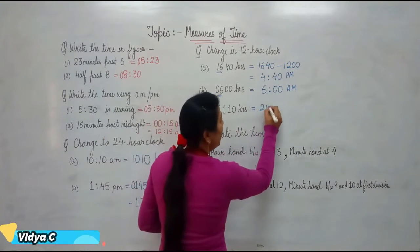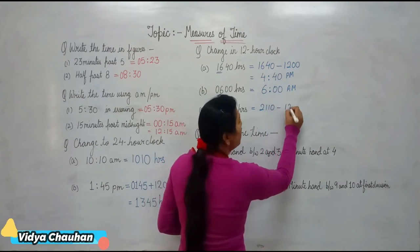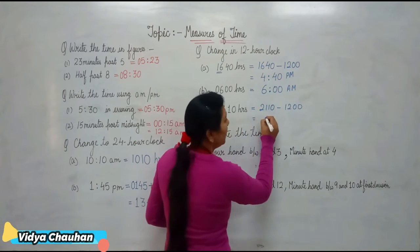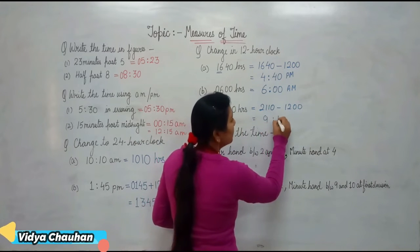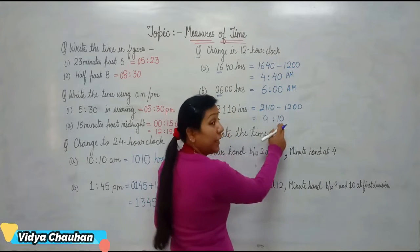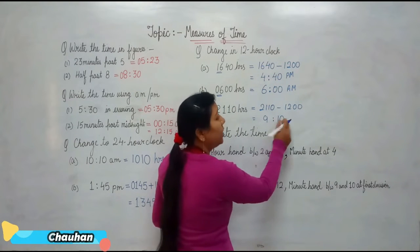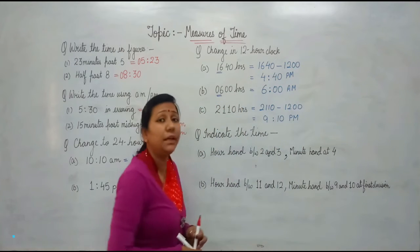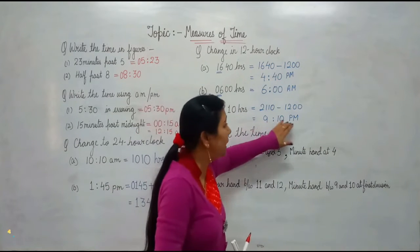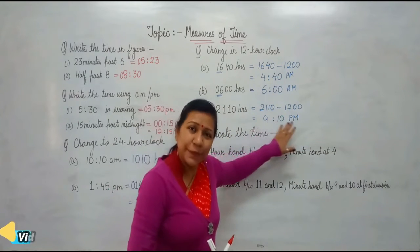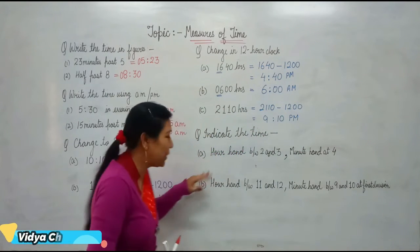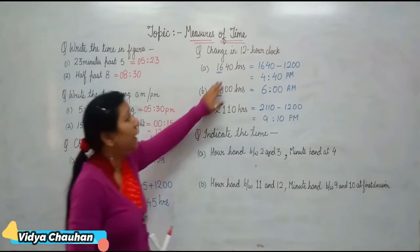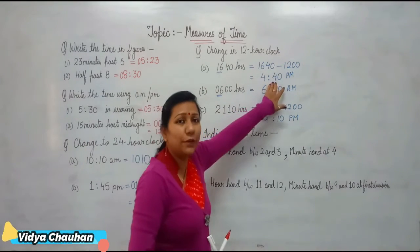Then the third part: 2110 hours. So that will be 2110 minus 1200. Subtracting the value, you get 910. Since we subtracted by 1200, it will be PM. So the time is 9:10 PM. And students, that is how to convert a 12-hour clock to 24-hour and a 24-hour clock to 12-hour.